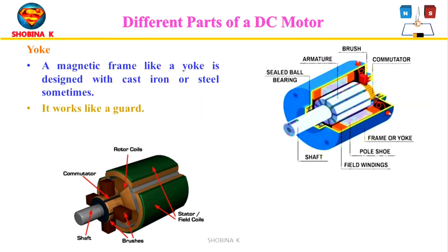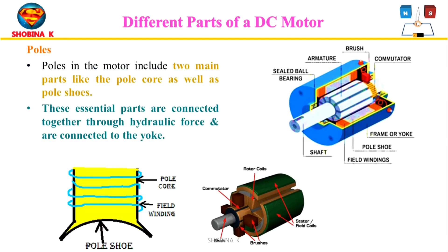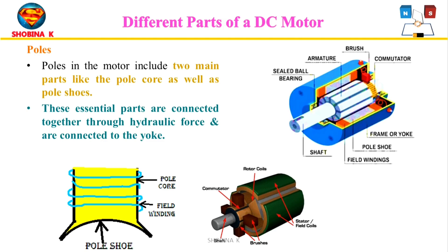The outer frame of a DC machine is called the yoke; it is made of cast iron or steel. It provides mechanical strength to the whole assembly and also carries the magnetic flux produced by the field winding. A pole of a DC machine is a supporting structure for the electromagnet, and the field winding is wound over the poles. Poles produce magnetic flux when the field winding is excited by DC supply voltage. The pole shoe is an extended part of a pole; the two main parts of poles are the pole core and pole shoes, which are connected together through hydraulic force and connected to the yoke.